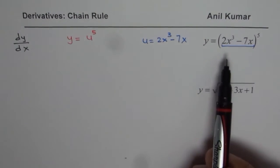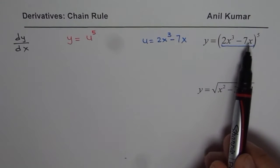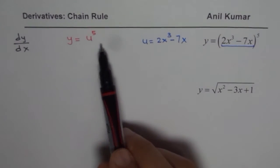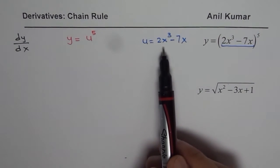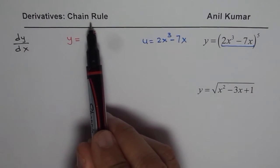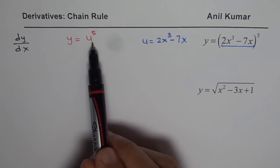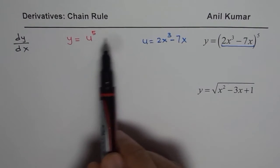One particular function has been written as a composite function, combination of two functions. Now, chain rule helps you to find derivative of such cases and that is the beauty of this rule.